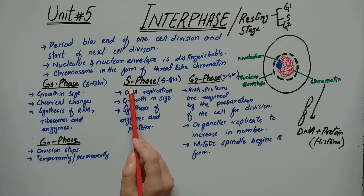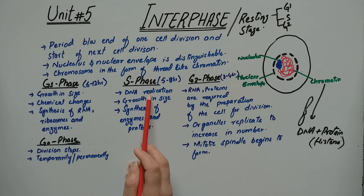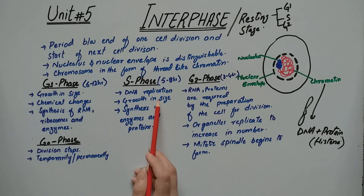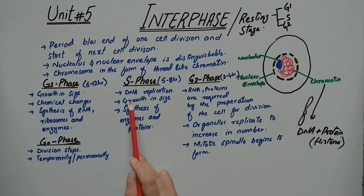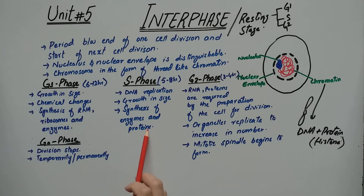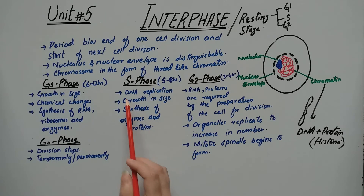S phase stands for synthesis phase. What happens here is the replication of DNA — the DNA will double in size because the G1 phase has prepared it. The cell also continues to grow in size. There is also synthesis of enzymes and proteins, which help the growth of cells and prepare for the G2 phase.